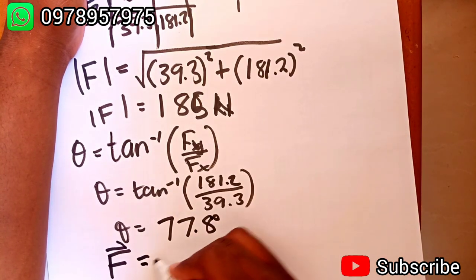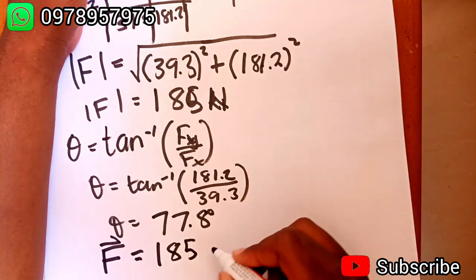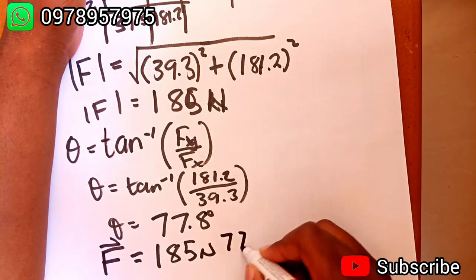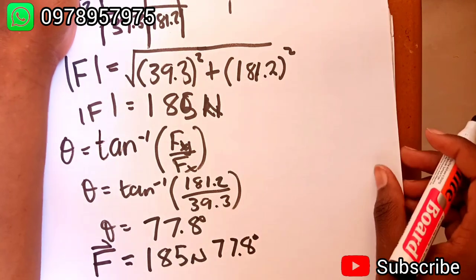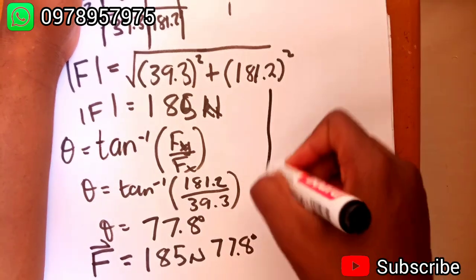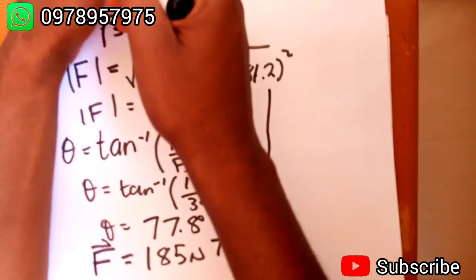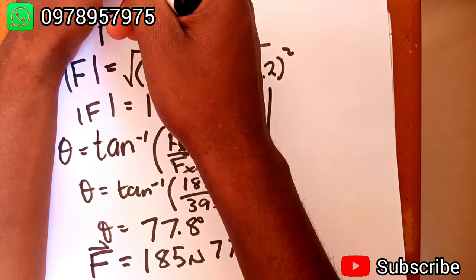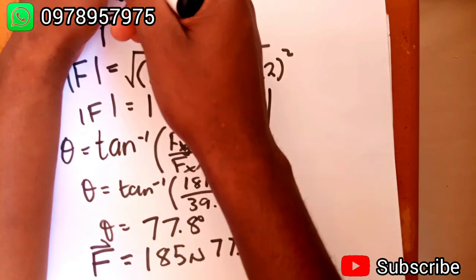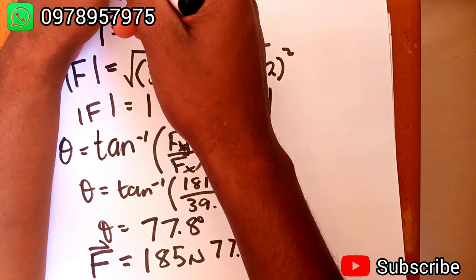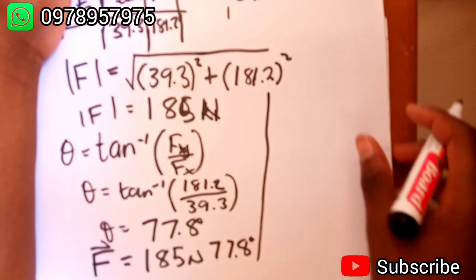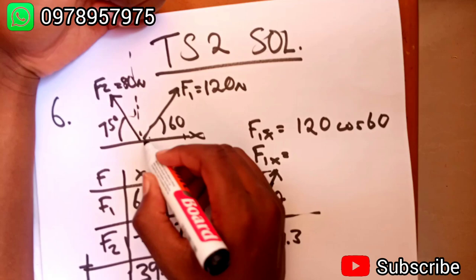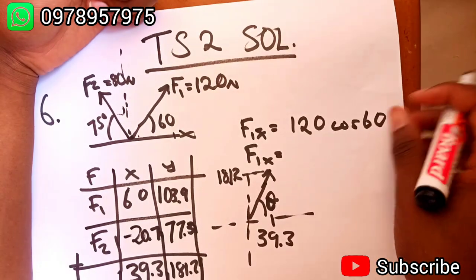So the force is 185 newtons at 77.8 degrees. Now in part b of the question, it's actually conceptual. We are being asked to say, find the force a third person would have to exert on the mule to make the net force equal to zero.